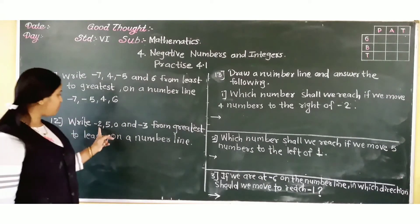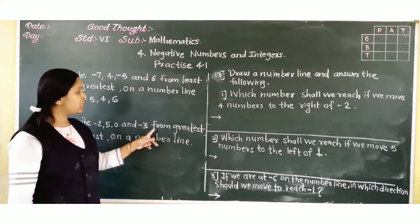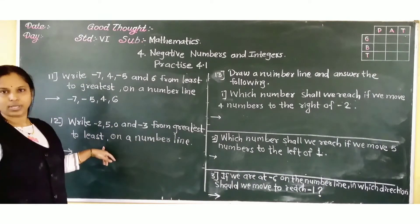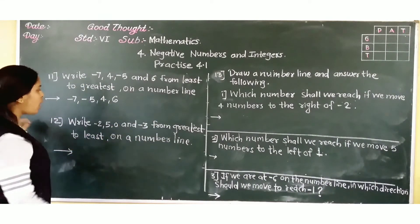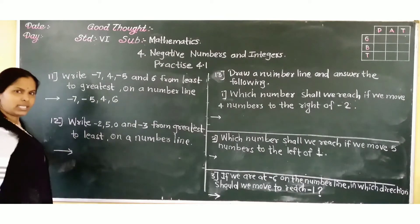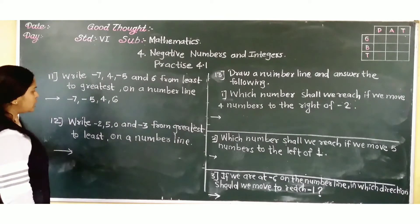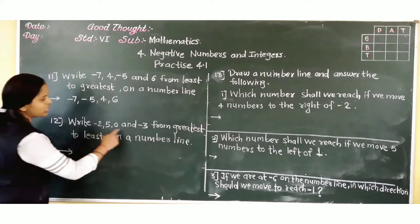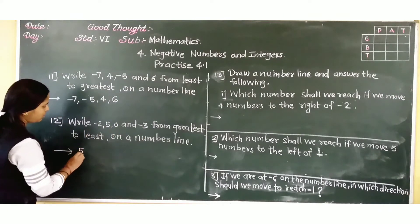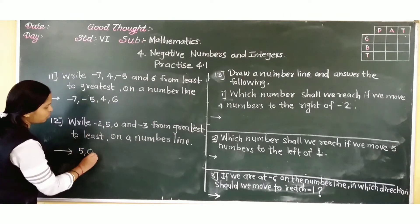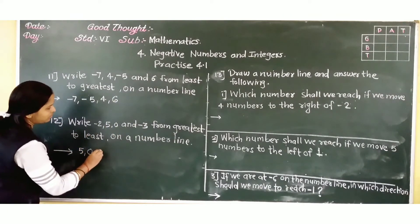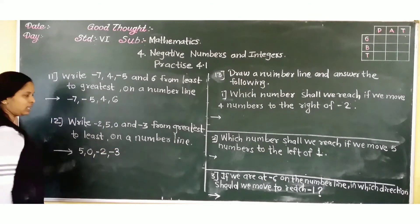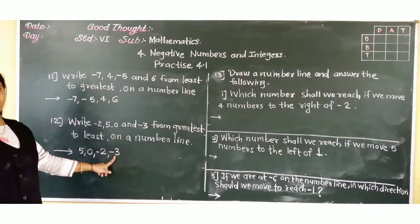Next: write minus 2, 5, 0 and minus 3 from greatest to least. This is descending order. So first we write the biggest number: 5. After that, 0. Then minus 2 and then minus 3. Minus 3 is the smallest number.